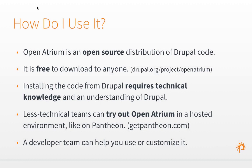Open Atrium is an open source distribution of the Drupal codebase, free to download at Drupal.org under Project Open Atrium. Installing from Drupal requires some technical knowledge. Less technical teams can try it in a hosted environment like Pantheon at getpantheon.com, or via the one-click install button at openatrium.com. A developer team can help customize it. Open Atrium is completely free, open source, with no licenses or per-seat fees.